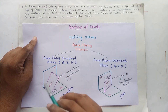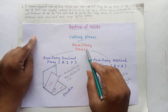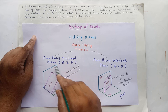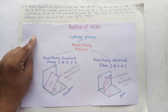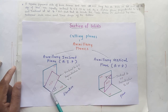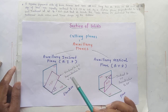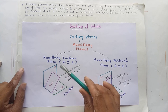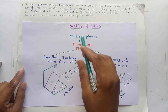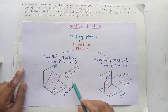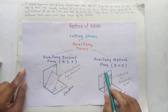We usually take auxiliary planes as a cutting fence. There are two types of auxiliary planes: one is the auxiliary inclined plane and the second is the auxiliary vertical plane. The auxiliary inclined plane is a plane which is inclined to the horizontal plane and perpendicular to the vertical plane. If the cutting plane is an auxiliary inclined plane, we have to show the cutting plane in the elevation.